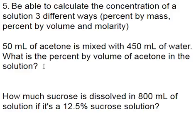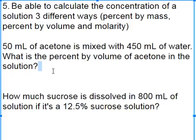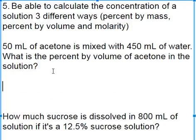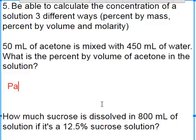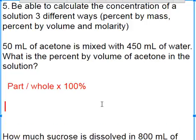So if we look at a couple of examples here: 50 milliliters of acetone is mixed with 450 milliliters of water. What's the percent by volume? So if you're doing a percent by anything, it's part over whole. So my part is 50 milliliters. Is 450 my whole, or do I have to add the 50 to it?